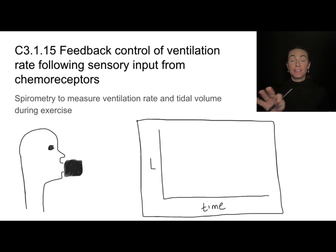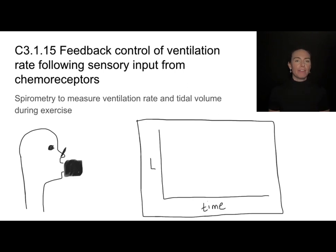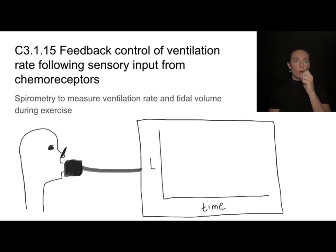Now let's talk about a really fun experiment you could do around this feedback loop. You might want to use what's called a spirometer — it can be a digital or analog device. You connect it to your mouth to breathe through it, and if we want all the air going through our mouth, we also clamp off our nose. The spirometer, especially if it's digital, will attach to some kind of screen or data logging device, and as you're breathing through it, it tracks your breaths over time.